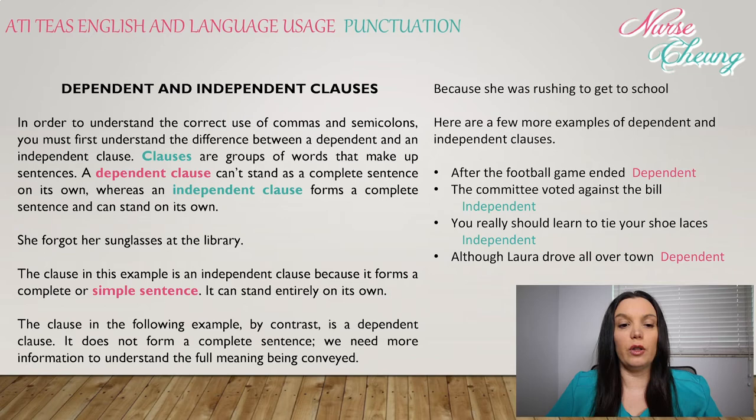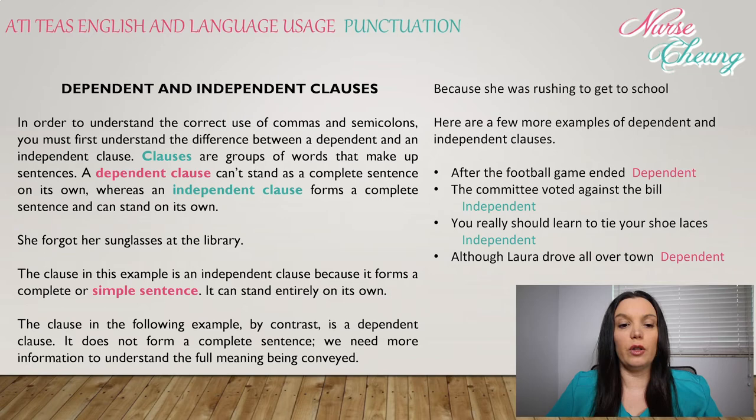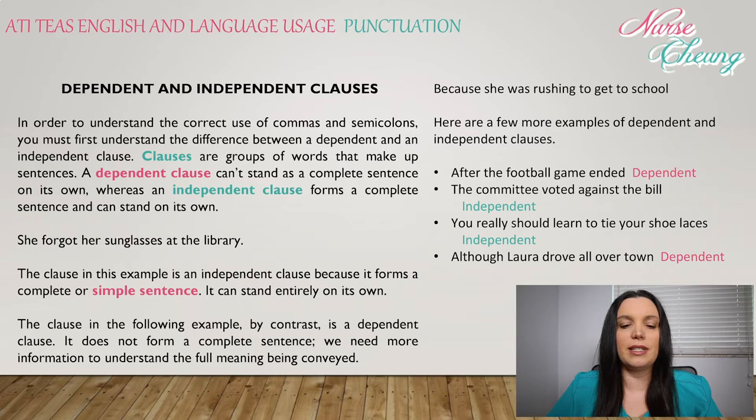In order to understand the correct use of commas and semicolons, we must first understand the difference between a dependent and independent clause. Clauses are groups of words that make up sentences. A dependent clause can't stand as a complete sentence on its own, whereas an independent clause forms a complete sentence and can stand on its own. For example, 'She forgot her sunglasses at the library' is an independent clause because it forms a complete sentence and can stand entirely on its own.